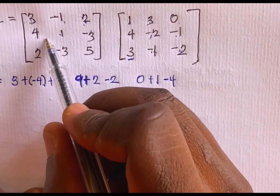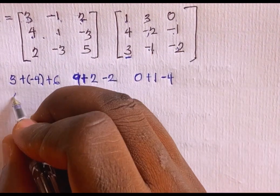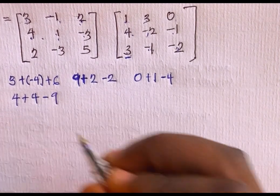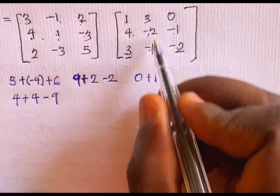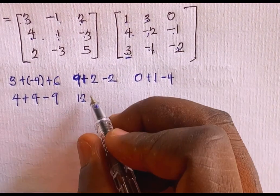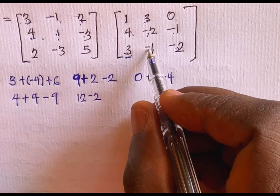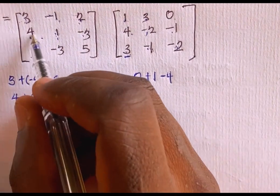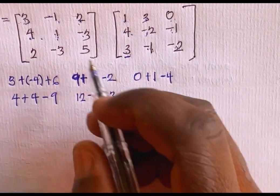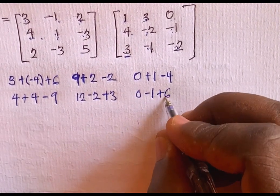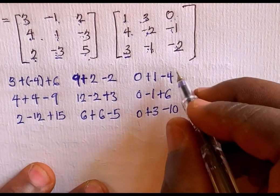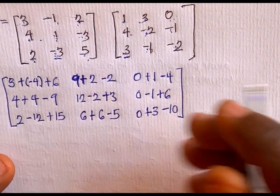Continuing with the second row: 4×1 + 1×4 + (-3)×3 = 4 + 4 - 9. Then 4×3 + 1×(-2) + (-3)×(-1) = 12 - 2 + 3. Then 4×0 + 1×(-1) + (-3)×(-2) = 0 - 1 + 6. Simplifying BC further, the results are: row 1 gives [5, 9, -3]; row 2 gives [-1, 13, 5]; the next entries follow similarly.